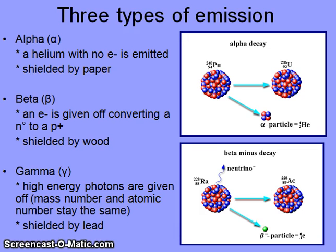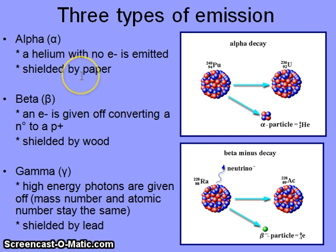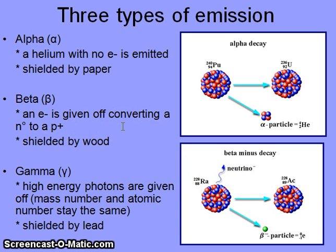There are three types of emission that GT chemistry students need to know. The first is alpha emission, where a helium particle with no electrons is emitted. An alpha particle is positively charged and can be shielded or blocked by paper. Beta emission involves a beta particle being given off, during which a neutron becomes converted to a proton. Because the beta particle is much smaller and more energetic, it takes something more substantial — like wood — to shield or block beta emission.